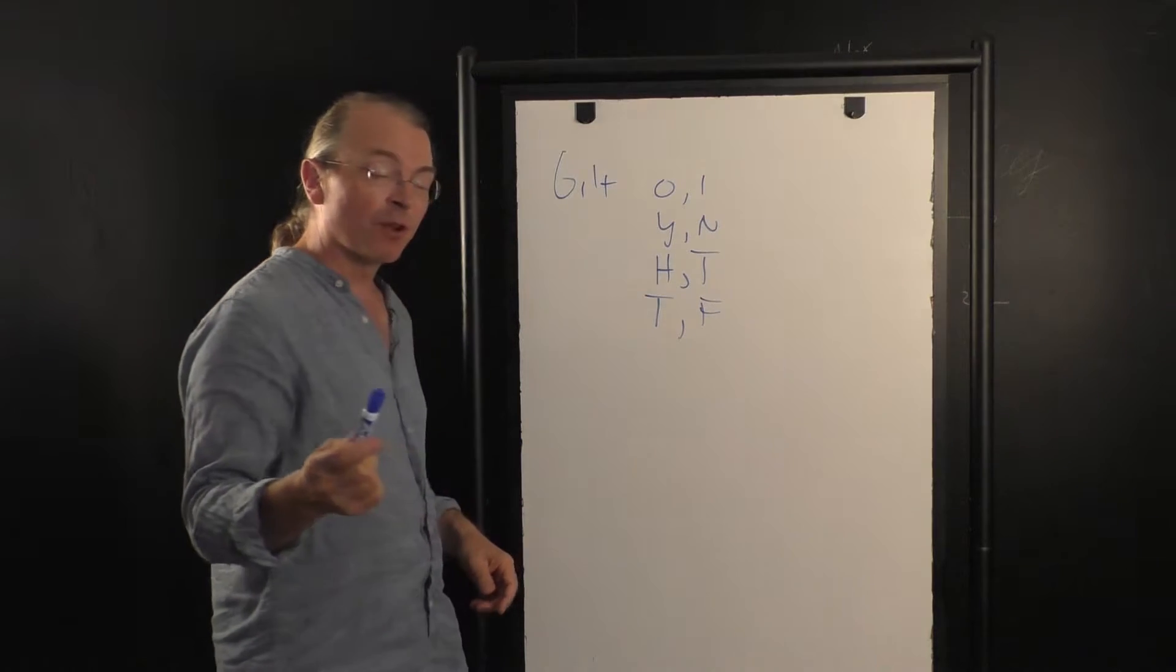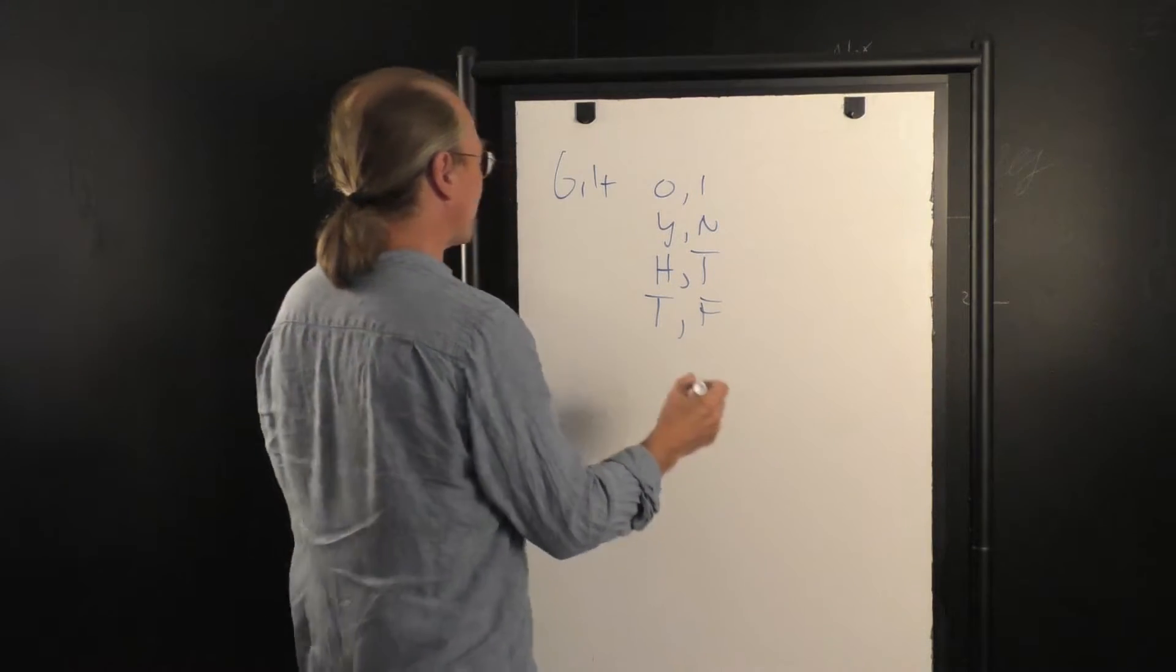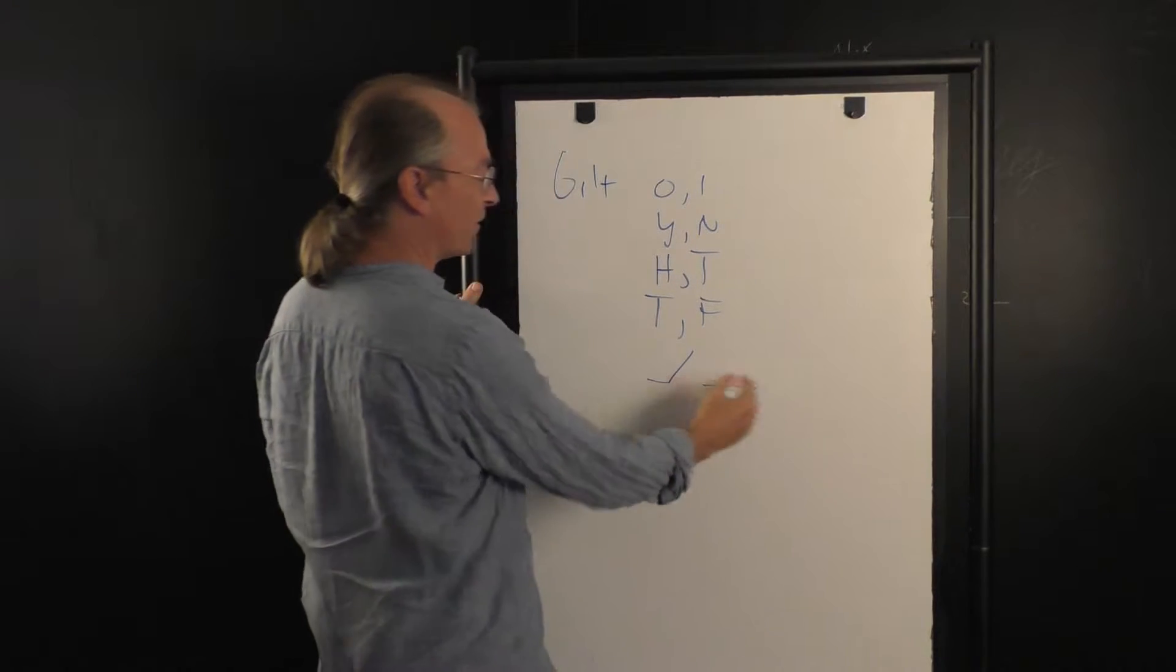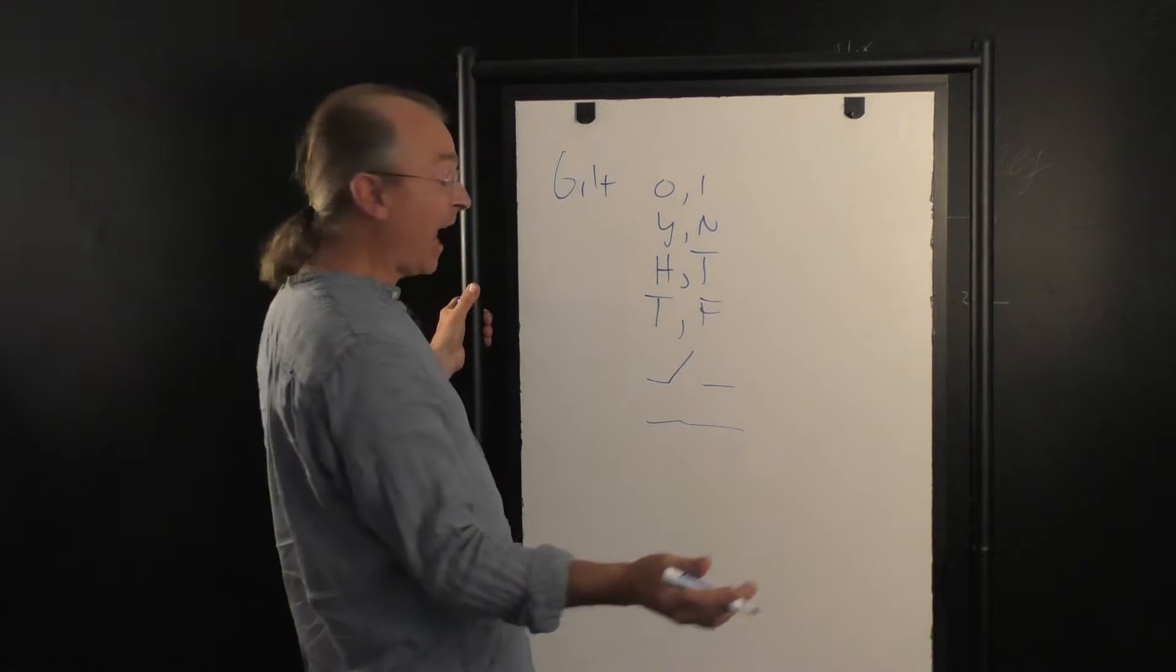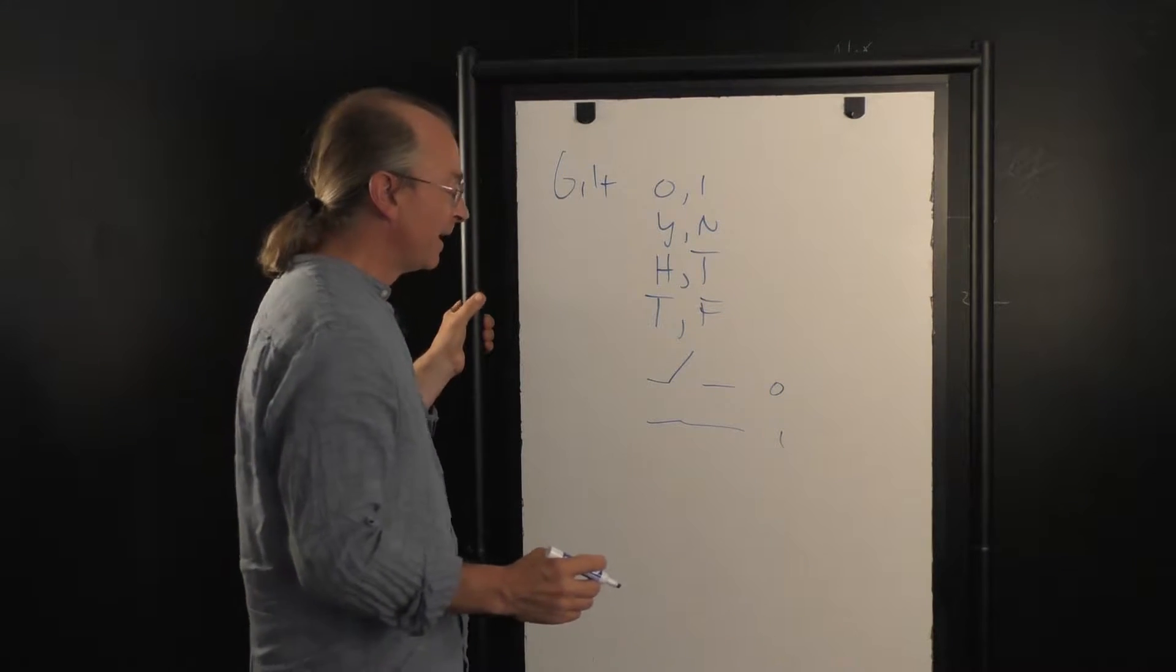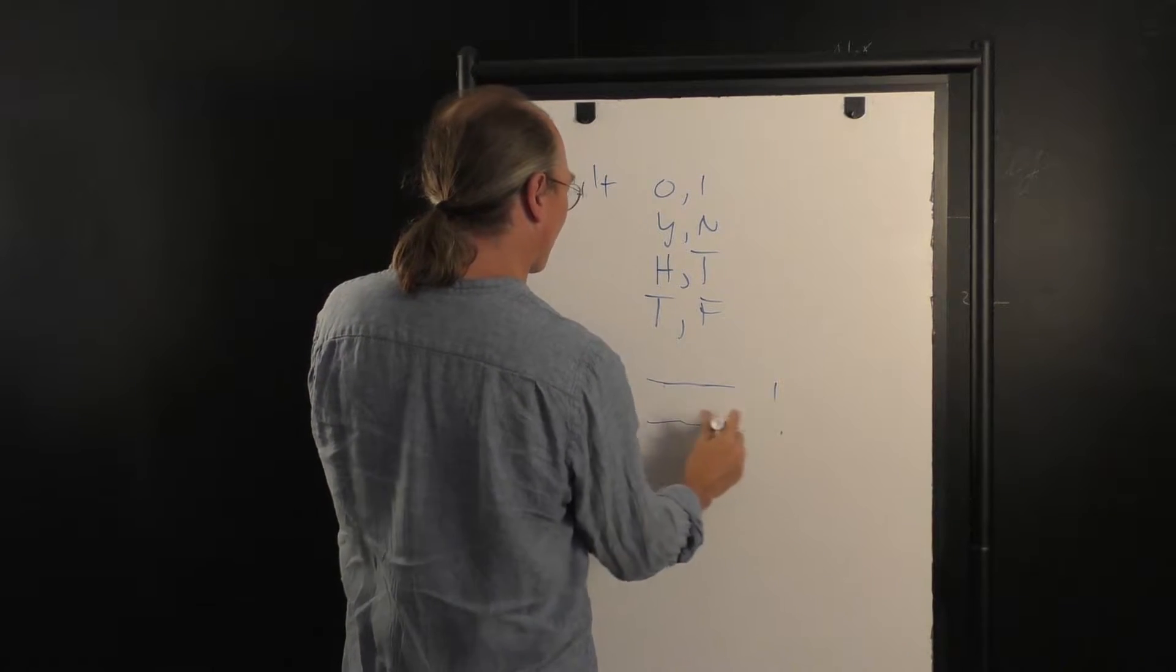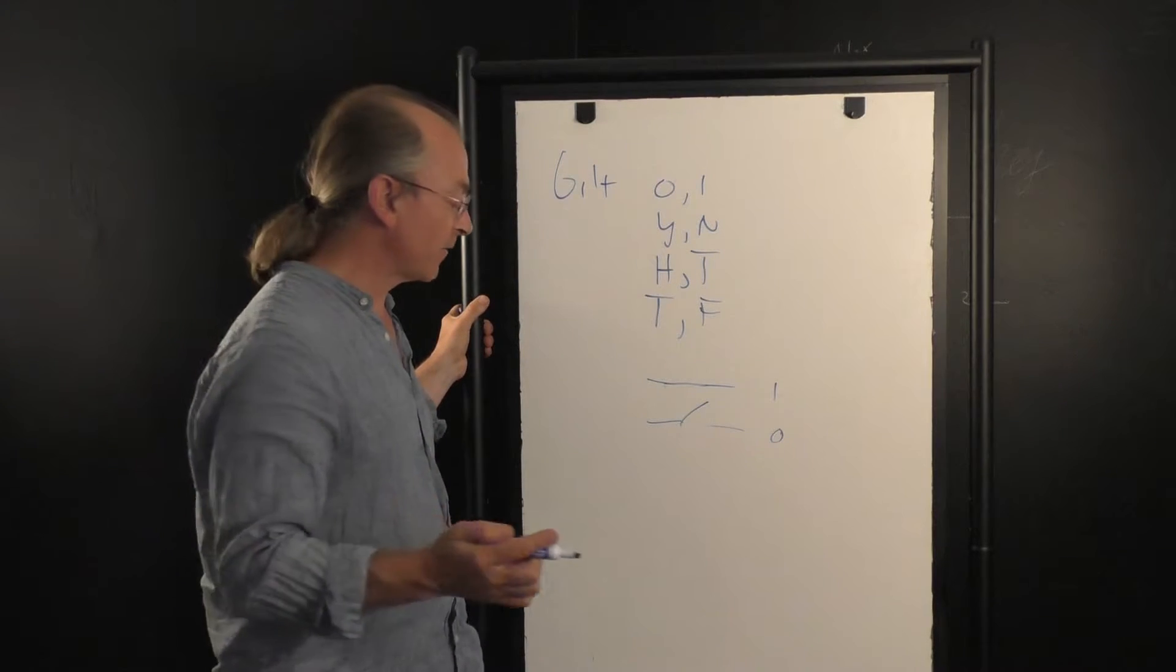Now it's also interesting to note that the bit is a physical object. For instance, in a computer we have transistors which are switches. A switch could be open so current cannot flow through, or closed so current can flow through. We could call this zero and this one. If we close the switch, zero becomes one. If we open it, one becomes zero. Then we're transforming and processing that information.